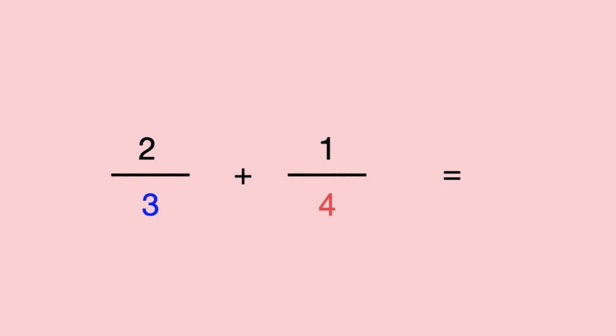Since the denominators are different, we have to times them both by the denominator of the other fraction. So for 2 thirds, we'll times both the numerator and denominator by 4. And we'll do the same for the other fraction, but with 3.